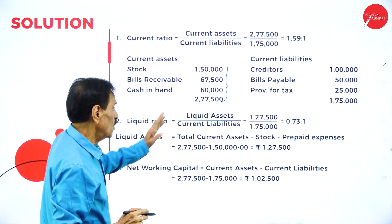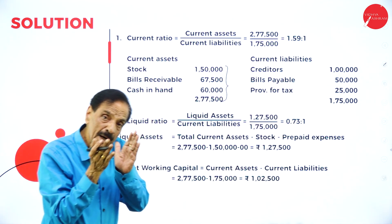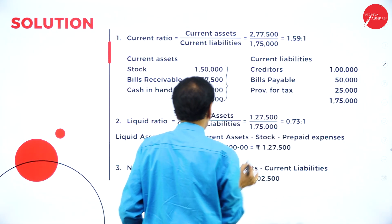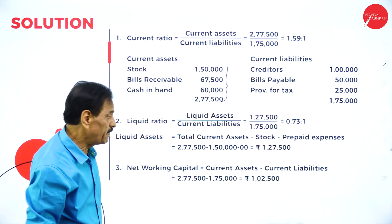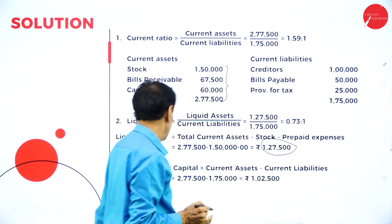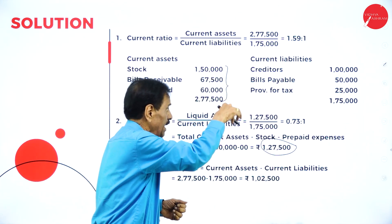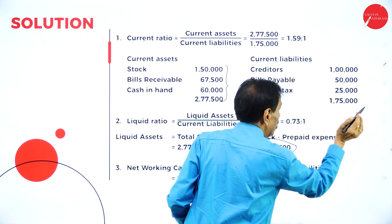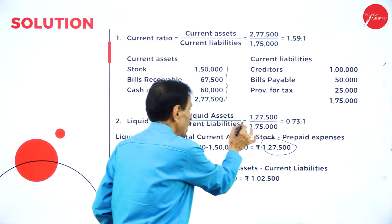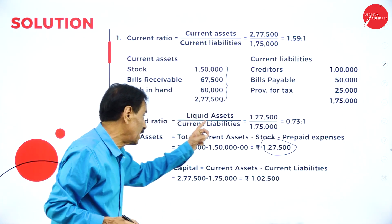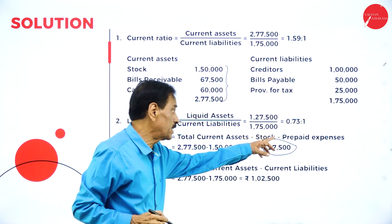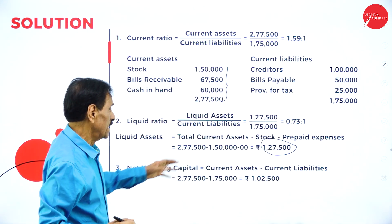Liquid asset equals total current asset minus stock minus prepaid expenses. Current asset is 2,77,500 minus stock of 1,50,000; there is no prepaid asset, so liquid asset is 1,27,500. Liquid liabilities equal current liability minus bank overdraft; here there is no bank overdraft, so it is 1,75,000. Liquid ratio equals liquid asset divided by current liability: 1,27,500 divided by 1,75,000 = 0.73 is to 1.